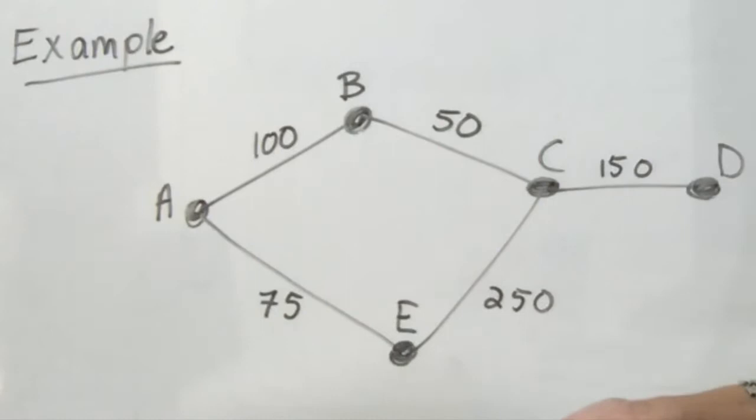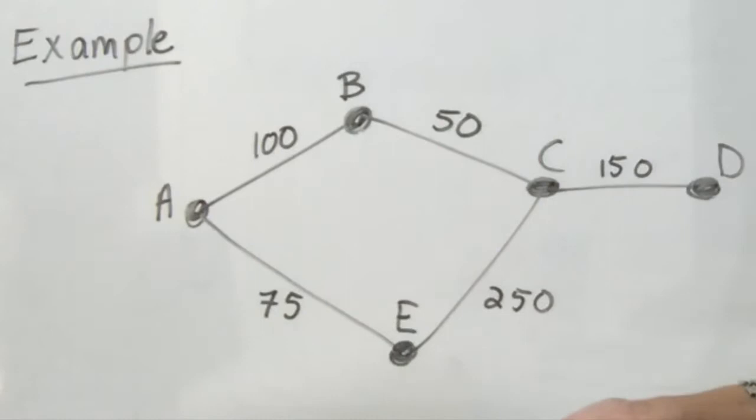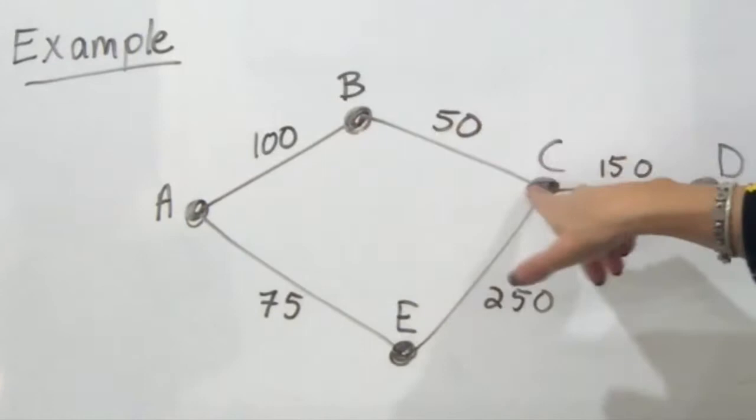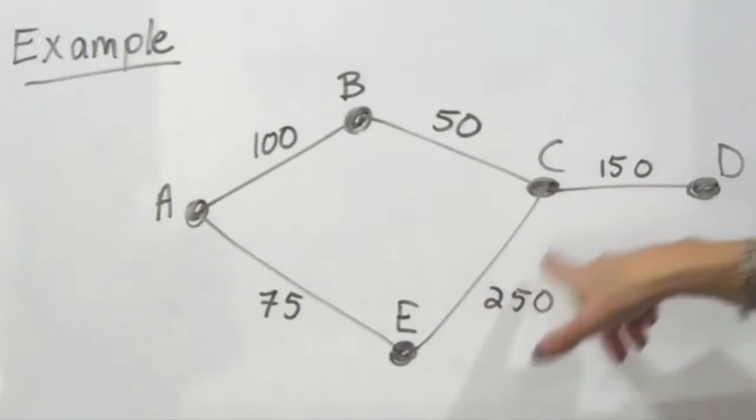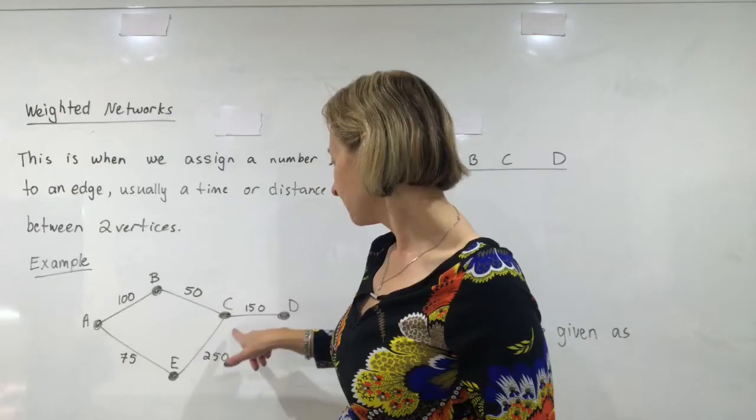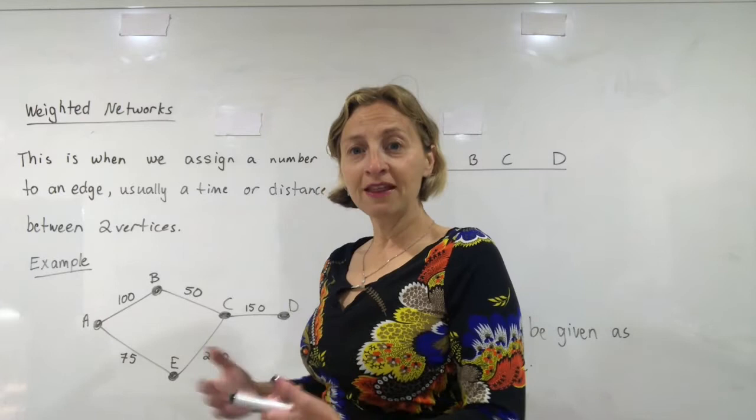If I wanted to get from A to D I could take A to B, B to C, C to D which would be 250, 300 kilometres or I could take the route down here via E, C to D which would be 475 kilometres. So I then have an option of which route I would like to take and it's very easy to see in the picture.